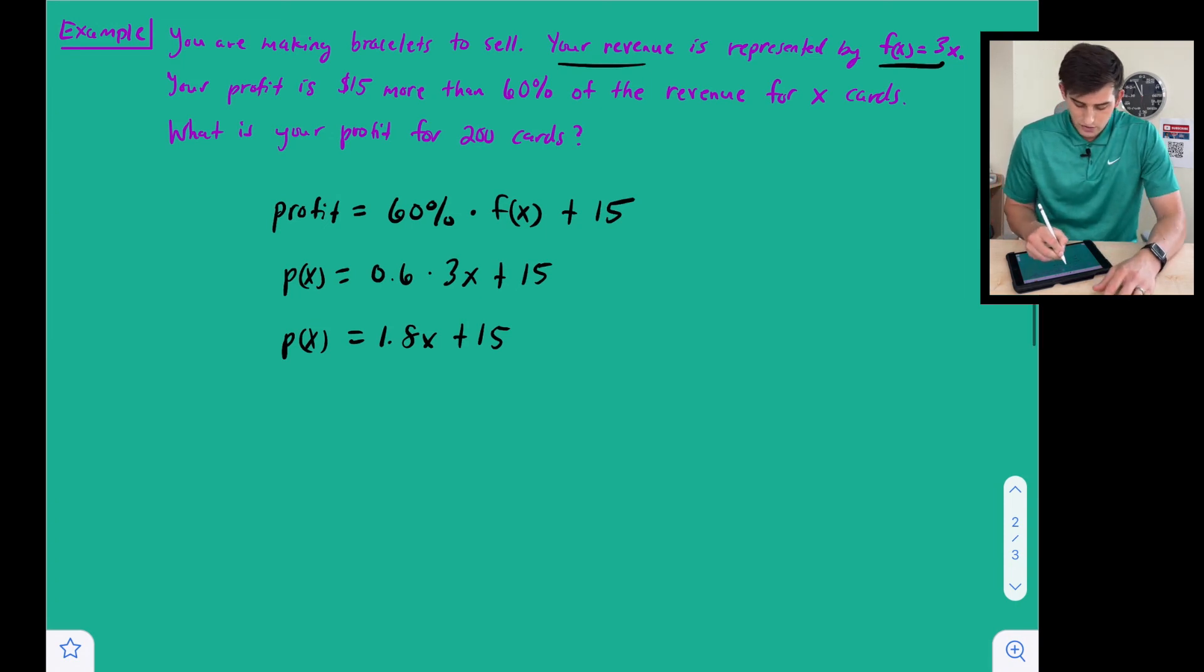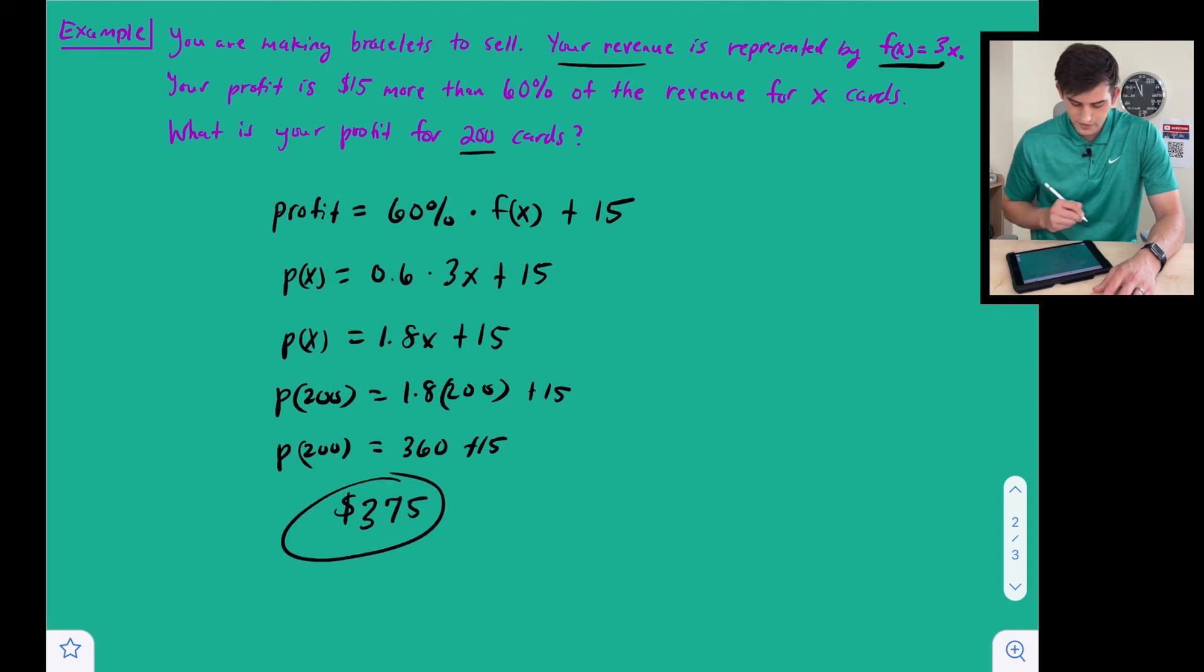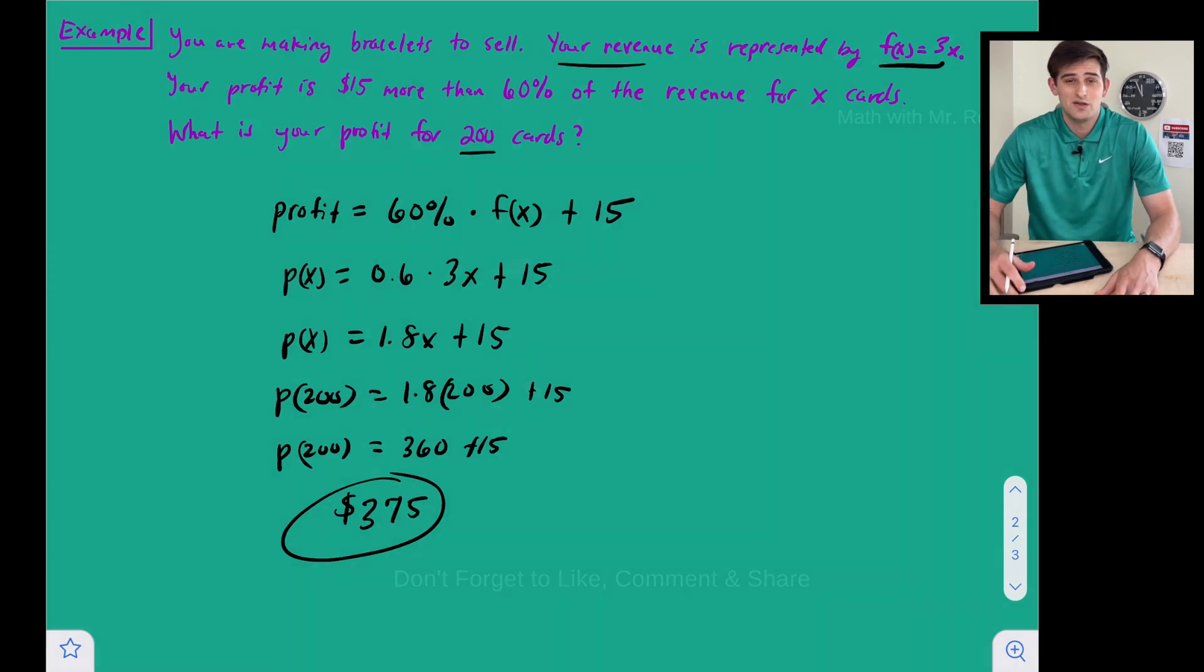Now to answer the question, we're just going to put 200 in here, so we want to find the p of 200, or basically what is y when x is 200? So once we solve here, 1.8 times 200 is going to give us 360 plus 15, and we get $375 for our profit. And so that is how you can write some functions when you have multiple transformations, and that's how you combine them.